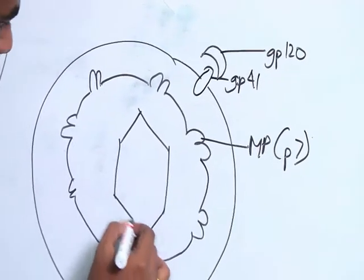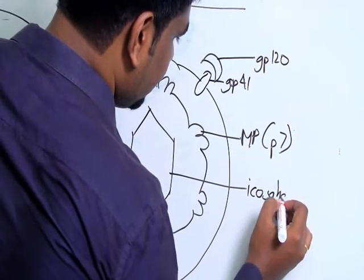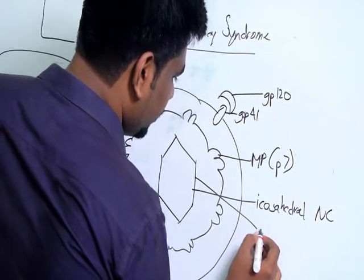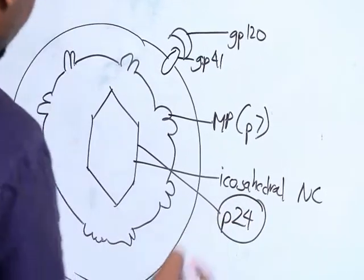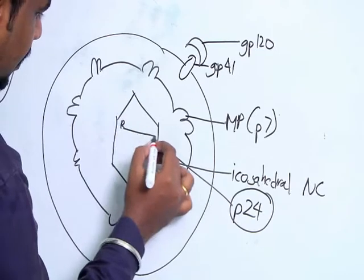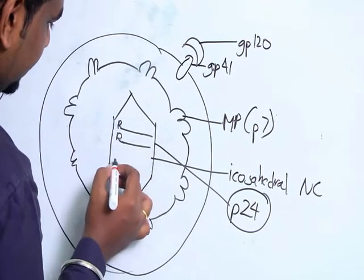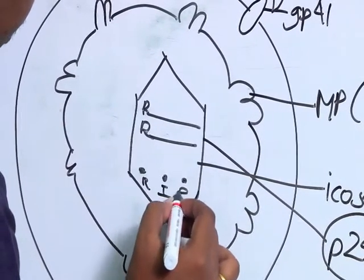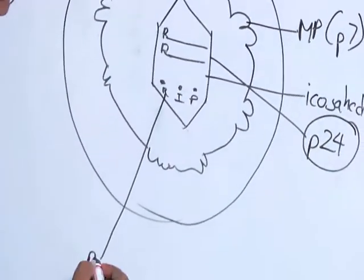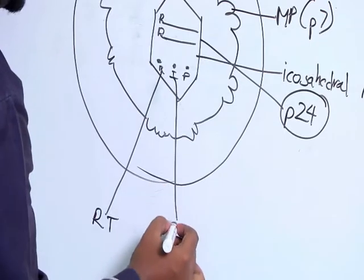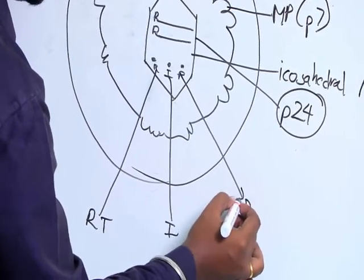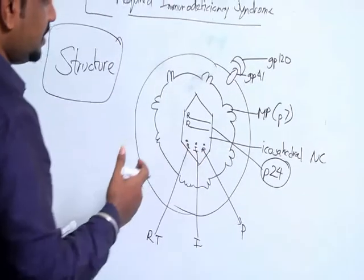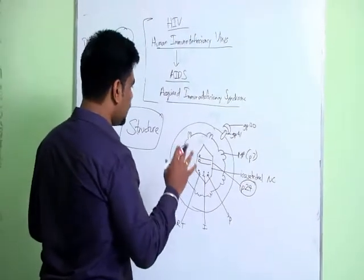Within the matrix protein there is an icosahedral nucleocapsid, which consists of a protein called P24 — an important protein. The nucleocapsid contains single strands of identical RNA and consists of three enzymes remembered by the acronym RIP: R refers to Reverse Transcriptase, I refers to Integrase, and P refers to Protease. We will see the function of all these proteins one by one.